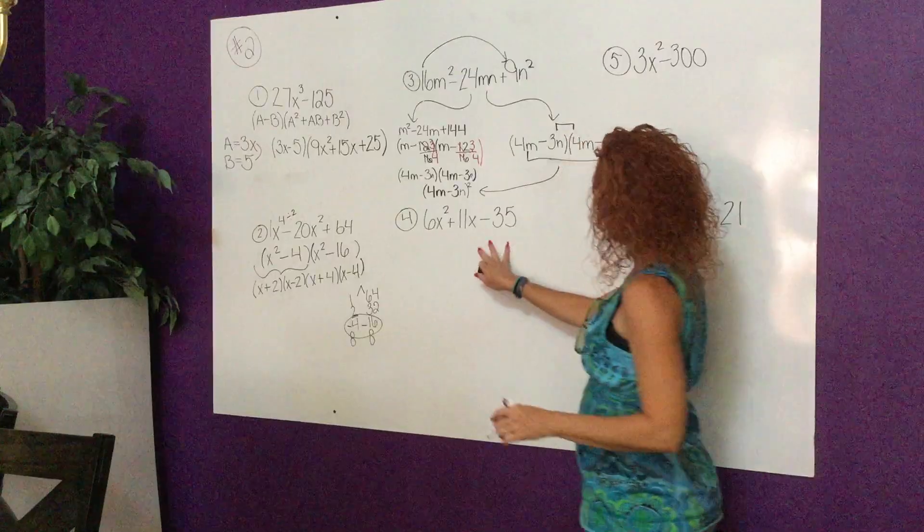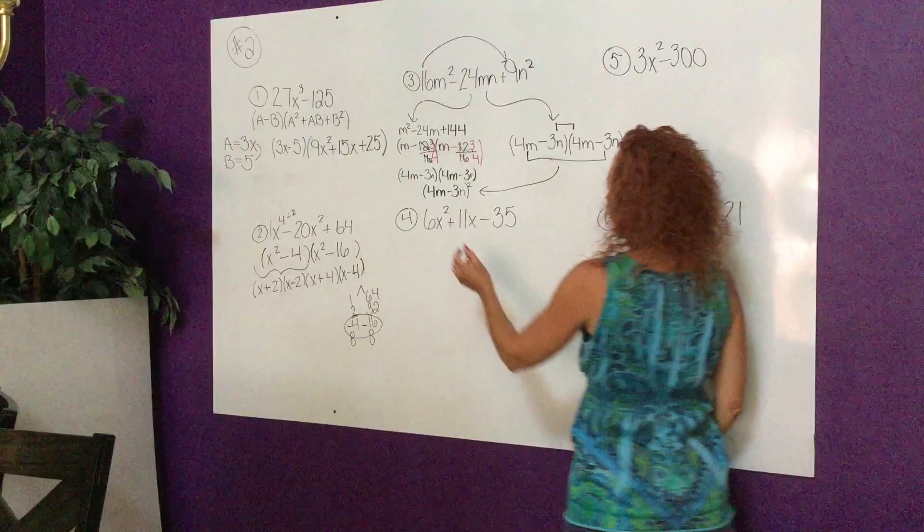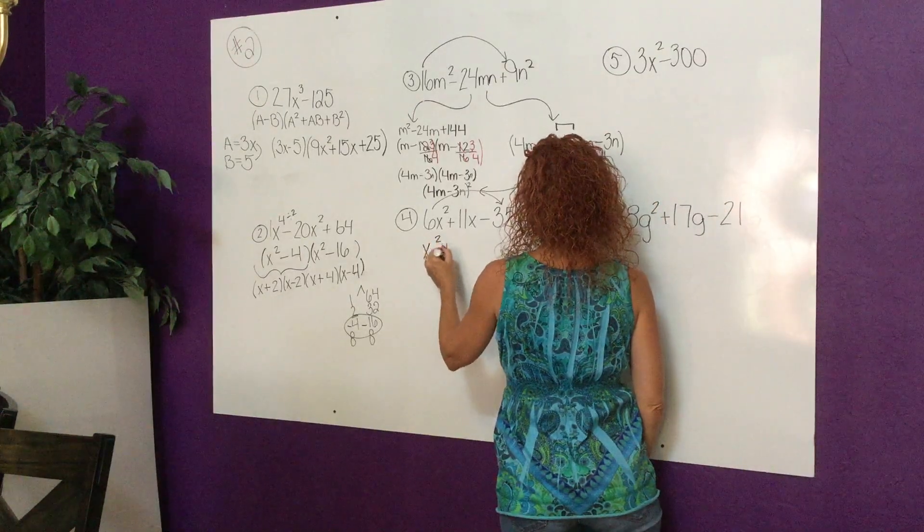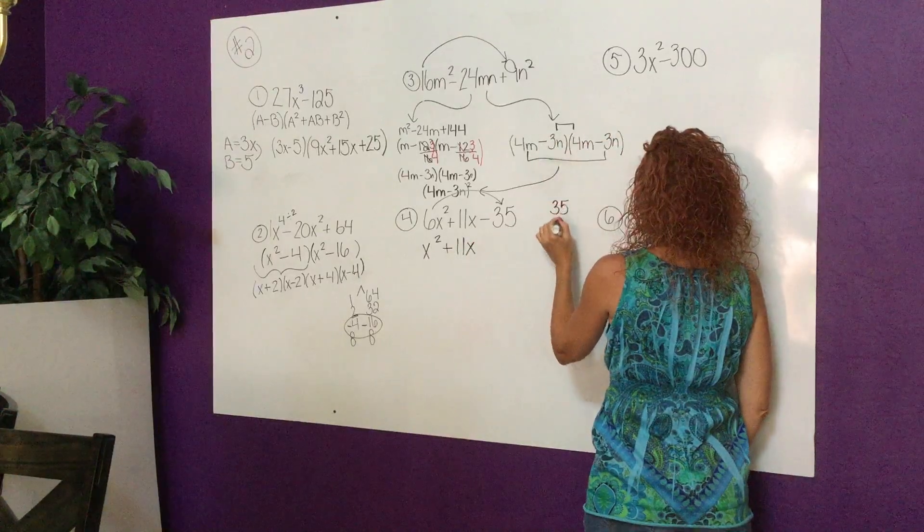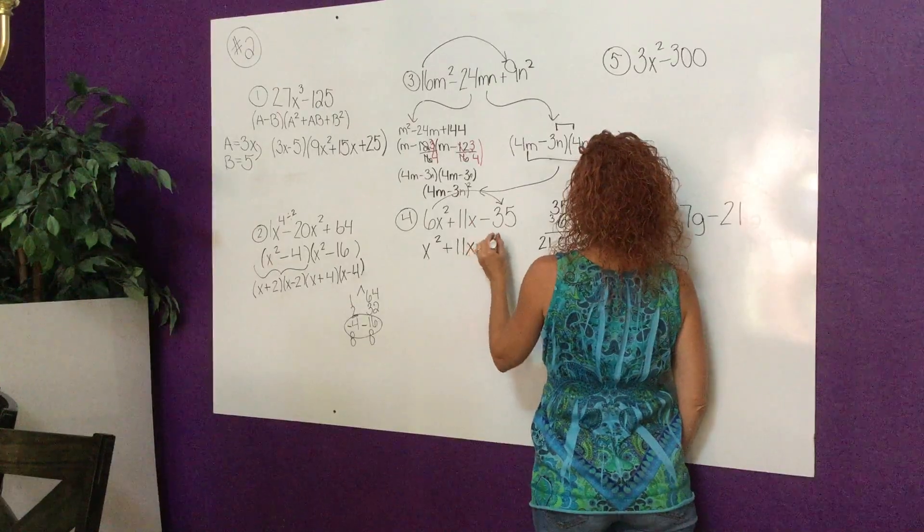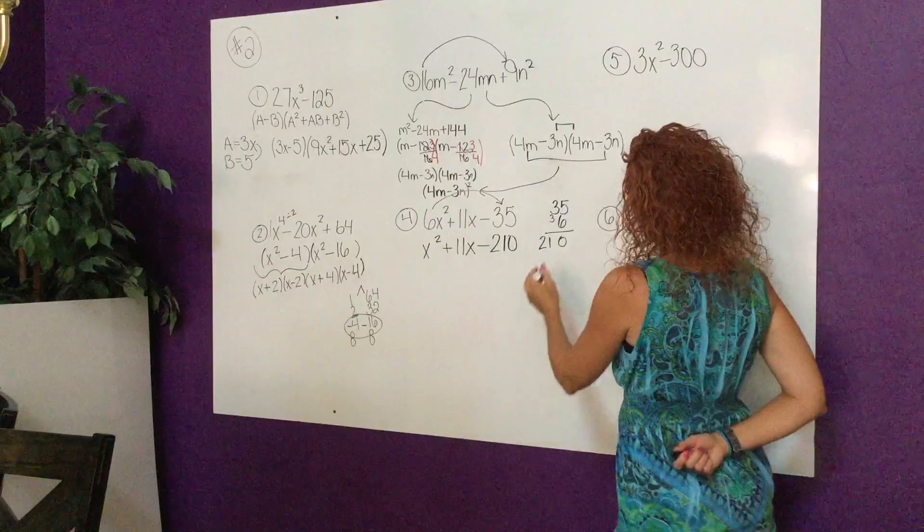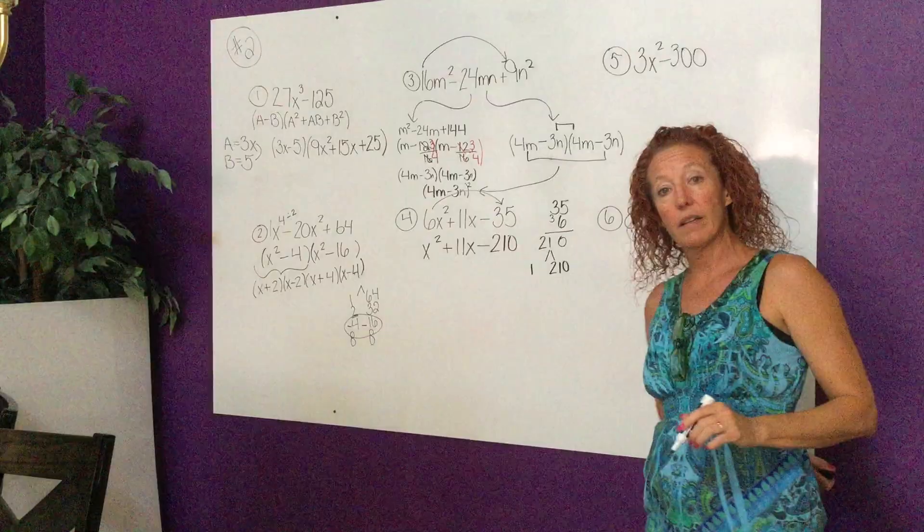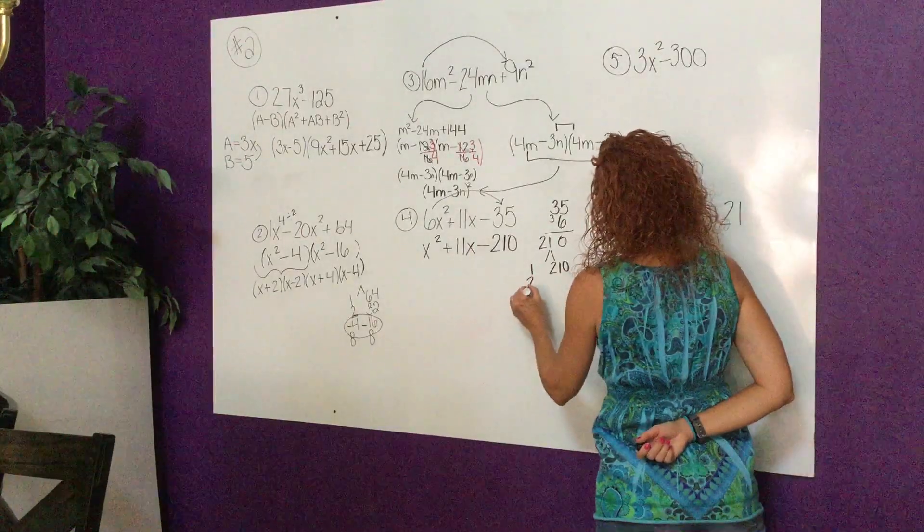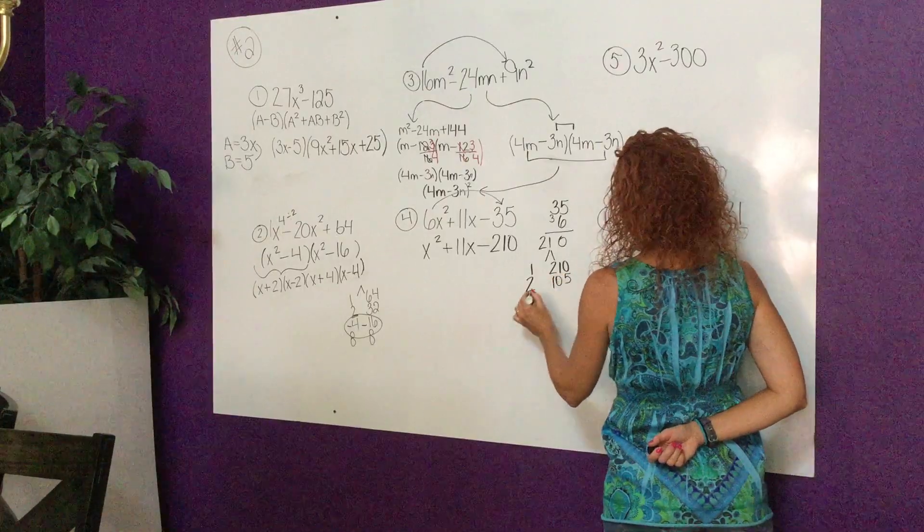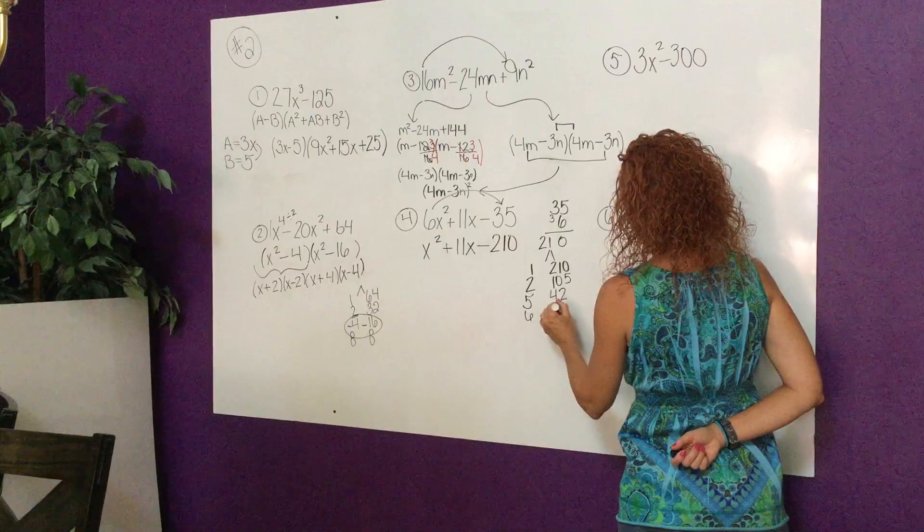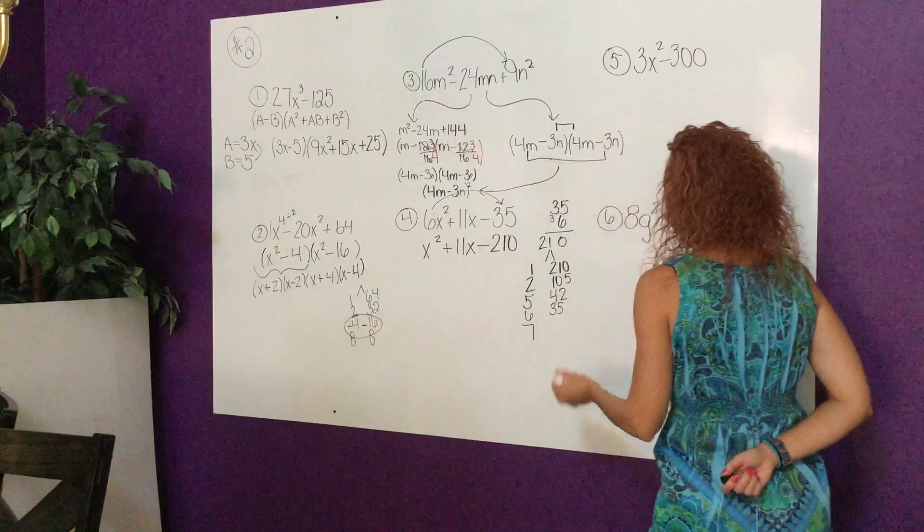Number four is definitely a slip and slide. I think the more we practice this the easier it will be. We're going to multiply that to the back, so we're going to get x² + 11x and 35 times 6 is 210, needs to be a negative 210 because of that negative right there. Now I'm going to list the factors of 210. So we have 1 and 210, 2 times 105, 5 goes into 210 42 times, 6 goes into 210 35 times, 7 goes into 210 30 times.